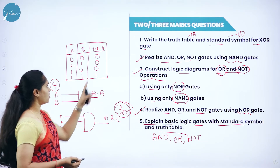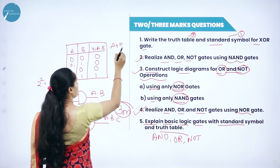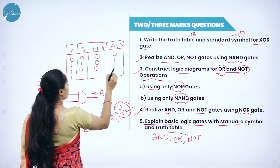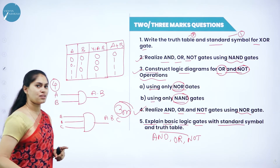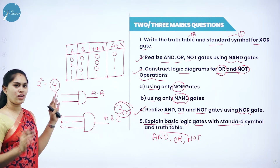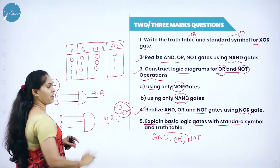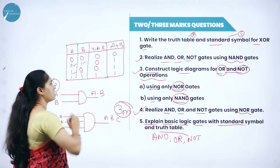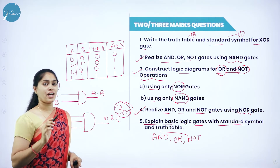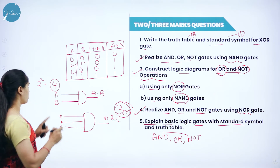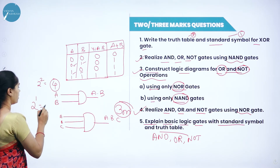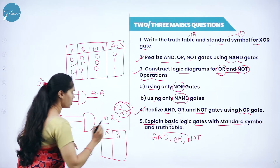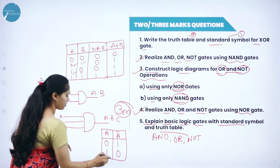For OR gate, instead of multiplication we do addition: 0+0=0, 1+0=1, 0+1=1, 1+1=1. Note that 1+1=1 in digital logic, not 2, because we deal only with zeros and ones. Output is high when any one of the input signals is high. For NOT gate, we deal with only one input and one output, so 2 power 1 equals 2 possibilities. If A is the input, A bar is the output: for 0 the output is 1, for 1 the output is 0.